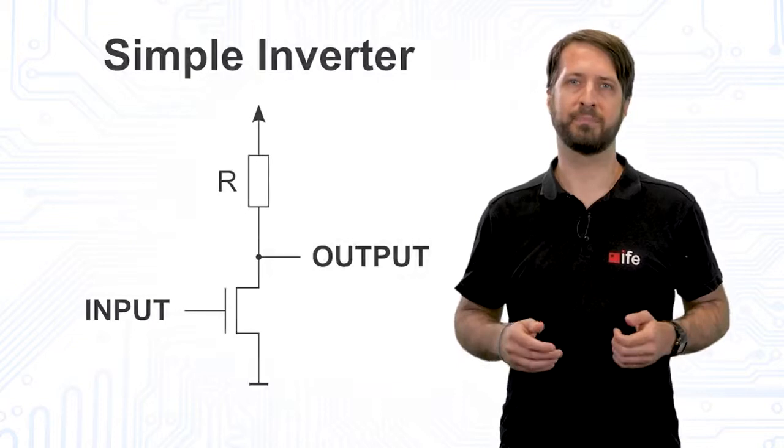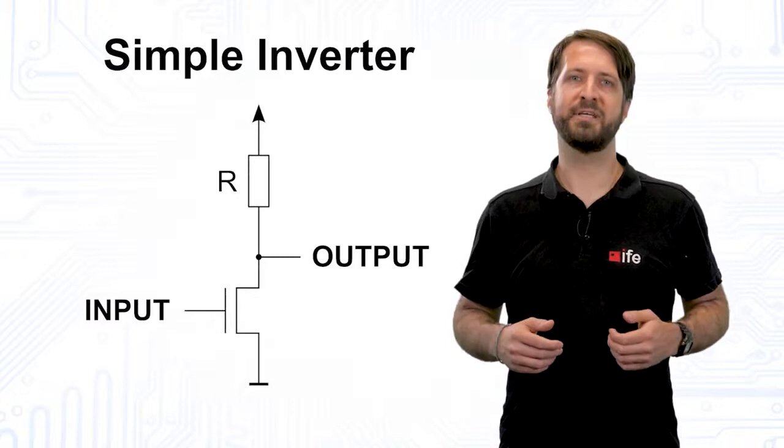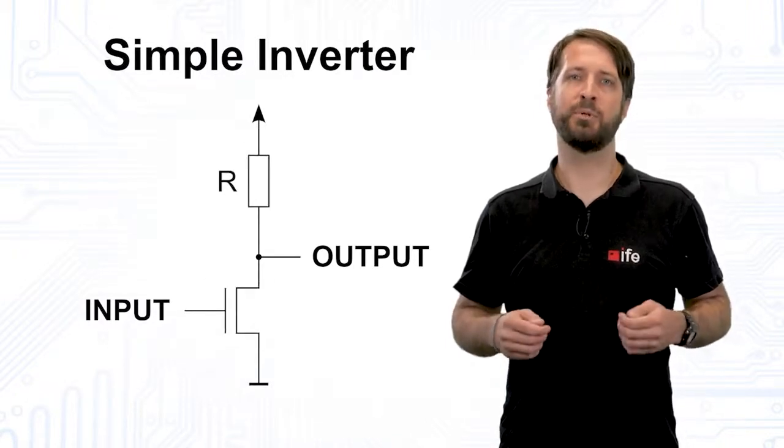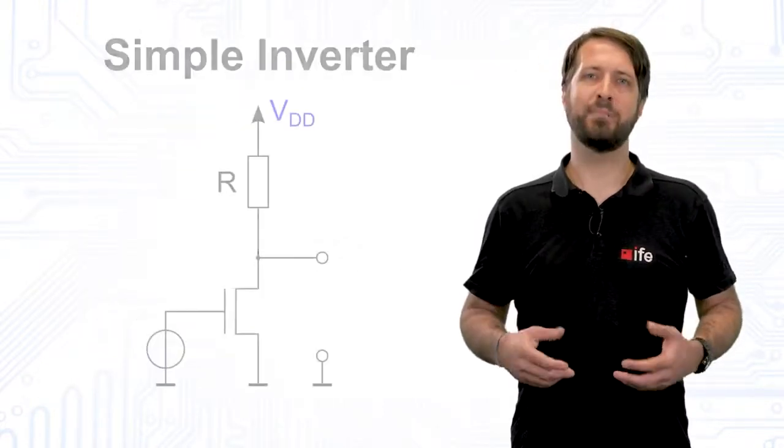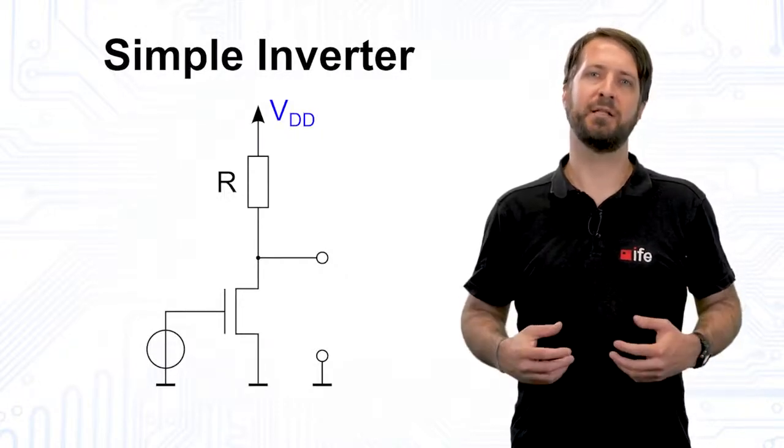The first logic circuit we want to have a closer look at is the inverter. We will approach this problem first with a simple circuit consisting of a resistor and a MOSFET, after which we will have a look at the advantages of CMOS technology. As its name already suggests, the inverter inverts the input signal at the output.